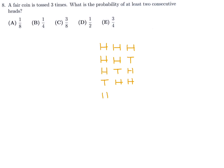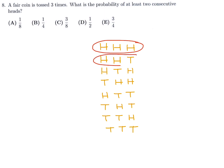The full list of outcomes is: HHH, HHT, HTH, THH, HTT, THT, TTH, and TTT. At least 2 consecutive heads: HHH qualifies (3 consecutive heads), HHT qualifies (2 consecutive heads), and THH qualifies (2 consecutive heads). Of the 8 possible outcomes, 3 satisfy the condition. So the probability is 3 out of 8, and therefore number 8, the answer is C.